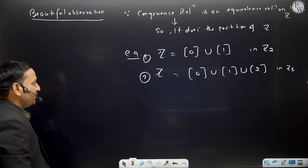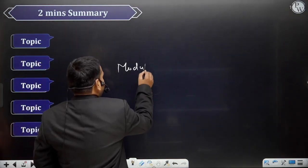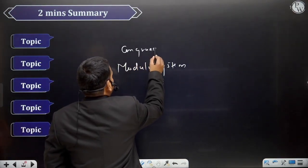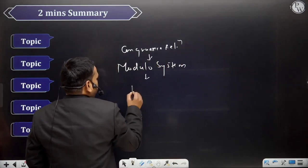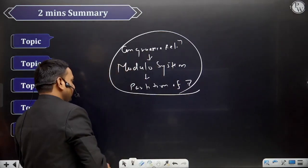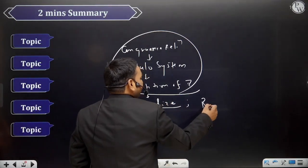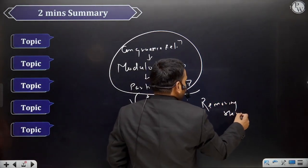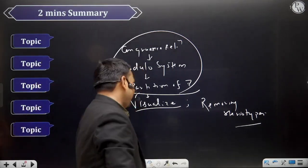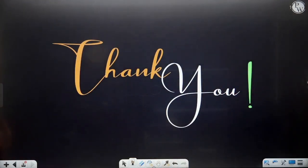I hope you have certainly enjoyed this conversation. If you have more suggestions, don't forget to let us know. So from where I started - congruence relation - went on to modulo system and then the partition of Z. This is the whole crux. Never forget to visualize the concept. Removing stereotypes - these things may be injurious to systematic learning. So keep learning, keep enjoying. Good luck.